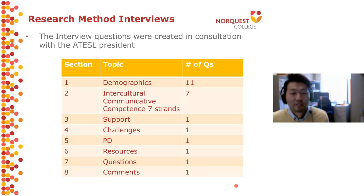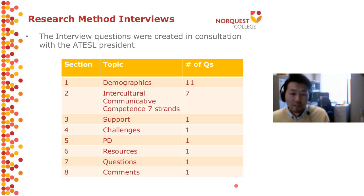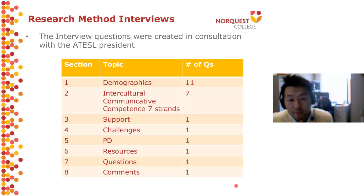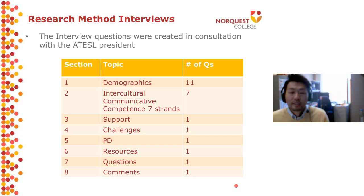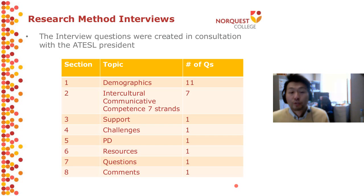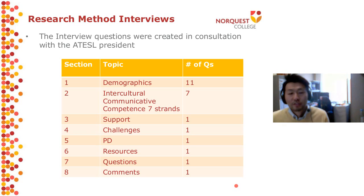For each of the seven strands we asked: what do you do to teach this one, any examples, any resources that you use, and all that. Then we asked about support they have or want, challenges they face when teaching culture and communication, what kind of professional development they want, what resources they want, and any general questions or comments.